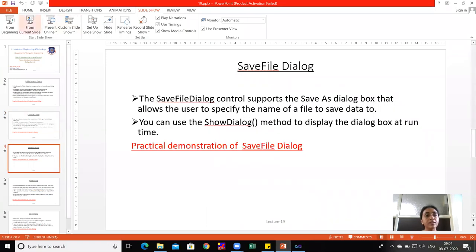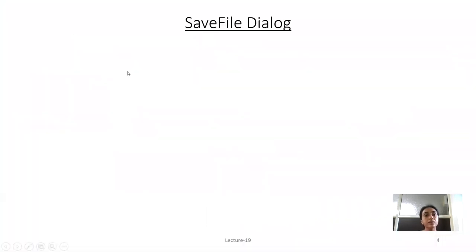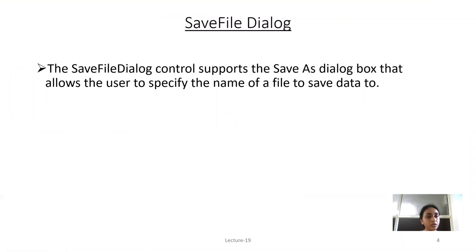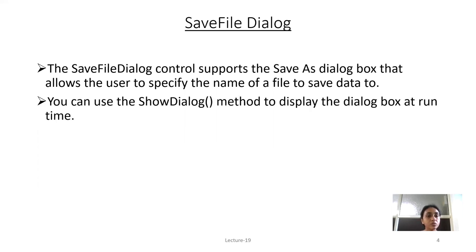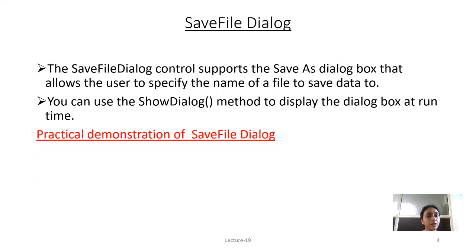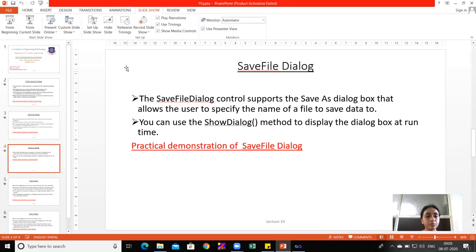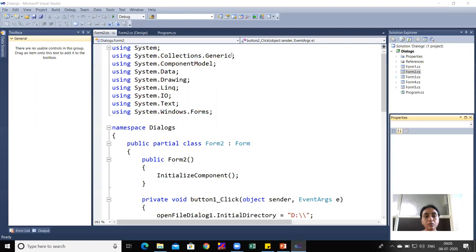The third dialog is SaveFileDialog. The SaveFileDialog control supports the Save As dialog box, which allows the user to specify the name of the file to save data to. You can use the ShowDialog method to display the dialog box at runtime.